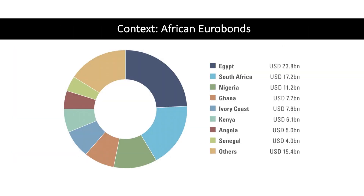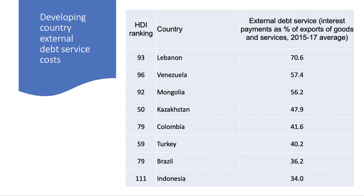However, some African countries — here are some good examples: Egypt, South Africa, Nigeria, Kenya, Angola — have been issuing eurobonds. They've gone into the international bond market and started issuing bonds, currently paying an average yield of about 6% to 6.5%. Often, developing countries are borrowing money from external sources, building up a level of external debt, which can be a significant burden to them.